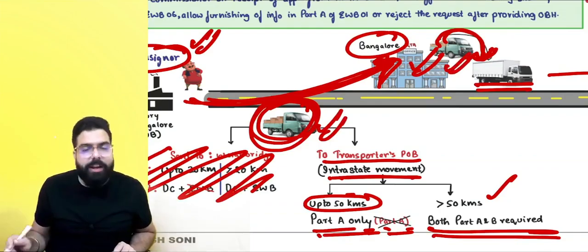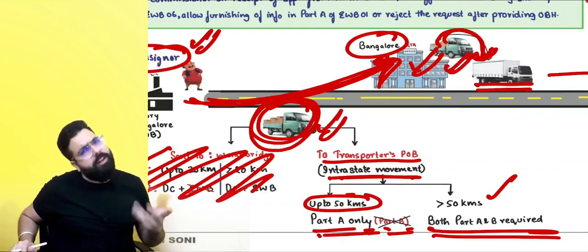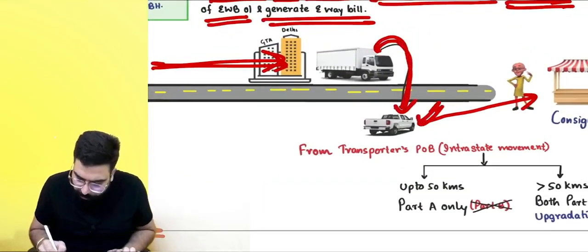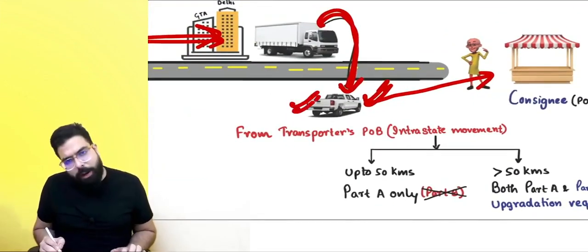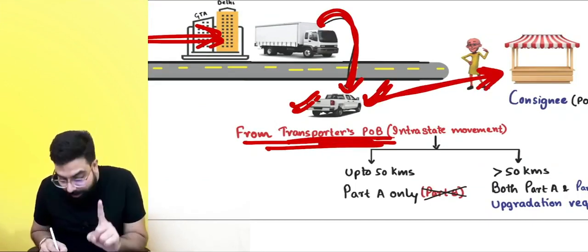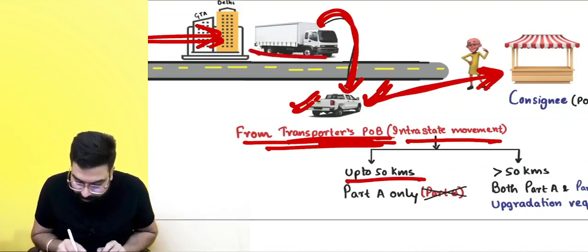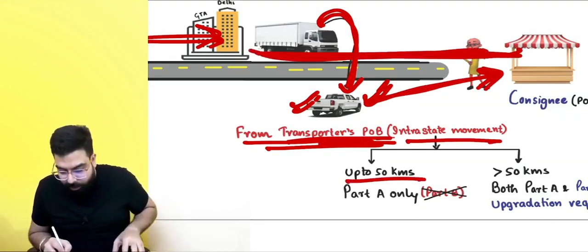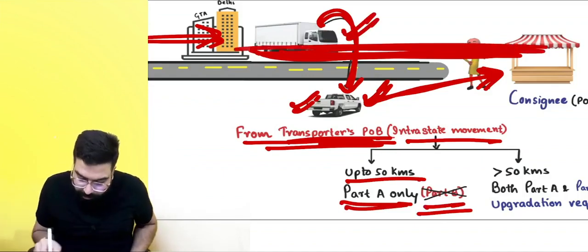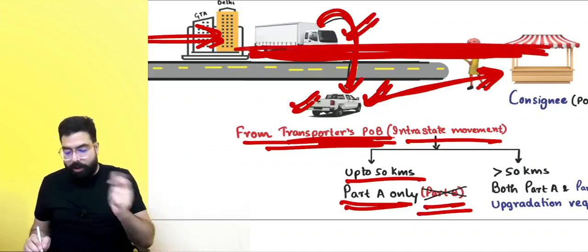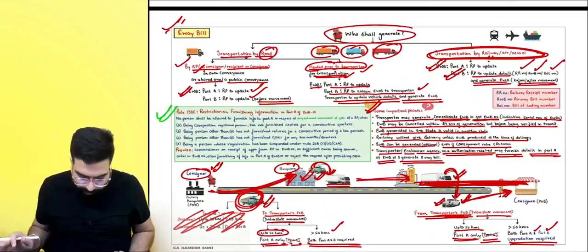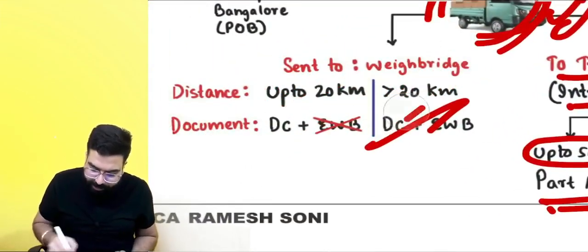When goods move from the transporter's godown to the consignee: if the movement is intrastate and up to 50 kilometers, only Part A is required — Part B with vehicle details need not be updated. But if the distance from the transporter's godown to the consignee is more than 50 kilometers, Part A is already there and Part B must also be updated.